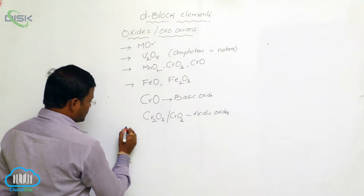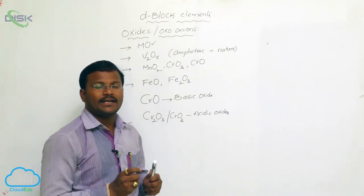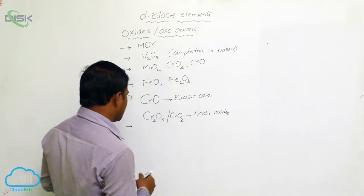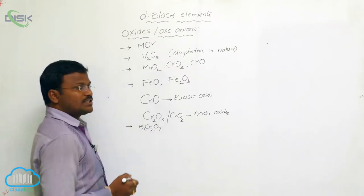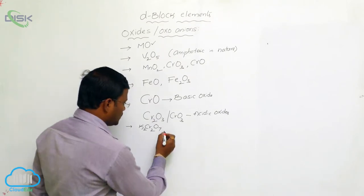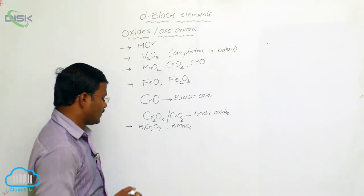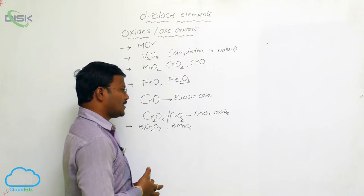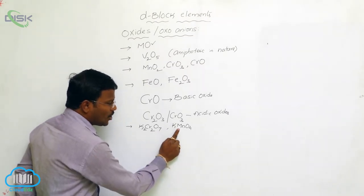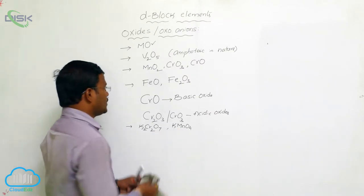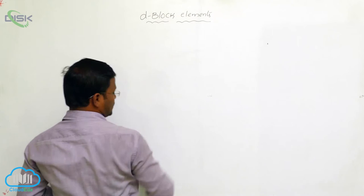These oxides produced from D-block elements show a wide variety of chemical properties. The two most important oxides to discuss are K2Cr2O7 (potassium dichromate), where chromium is the D-block element, and KMnO4 (potassium permanganate), where manganese is the transition metal present.